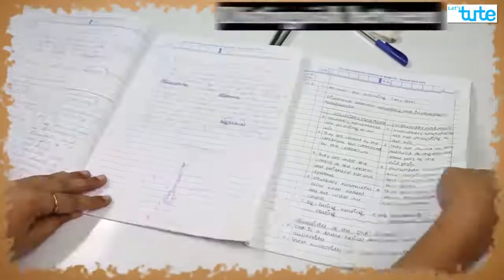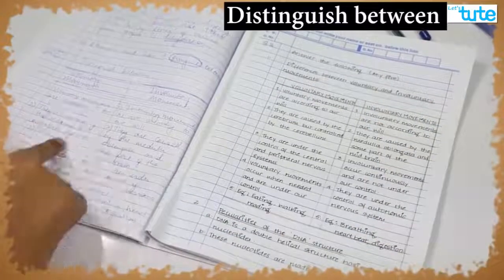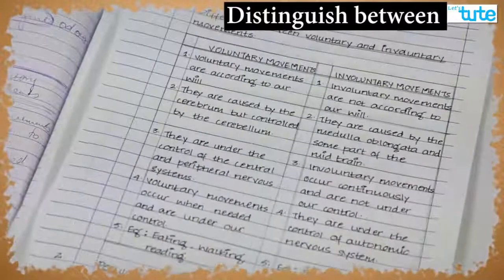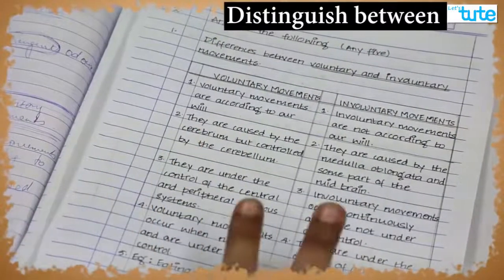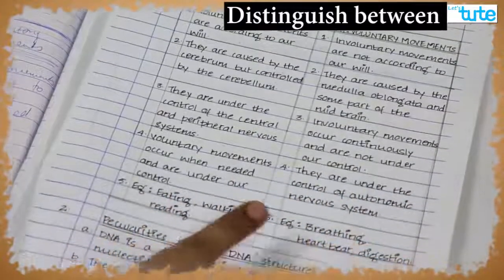Now, if there is a question on distinguish or difference between two things, you may write it this way by making two different columns. And for two marks, write at least four points. Also, try giving examples.